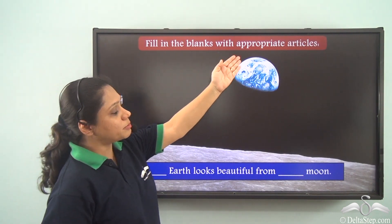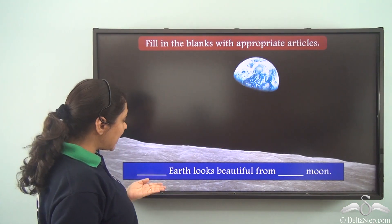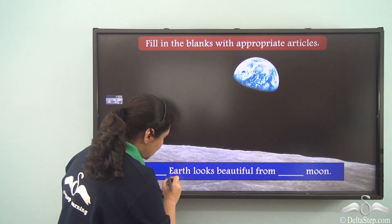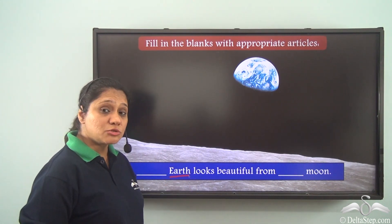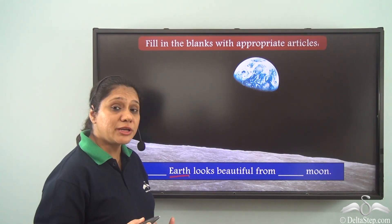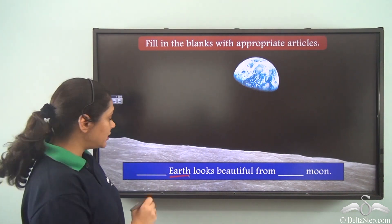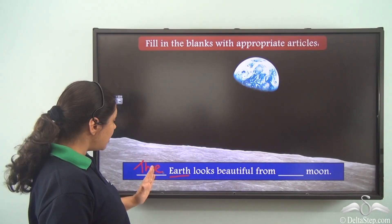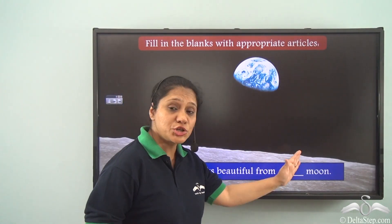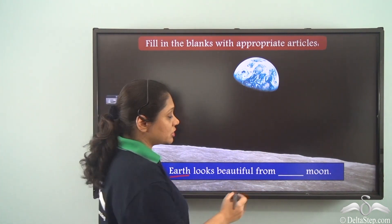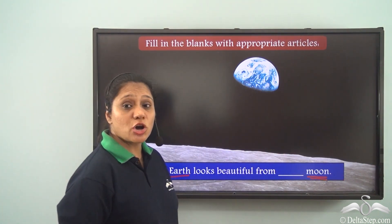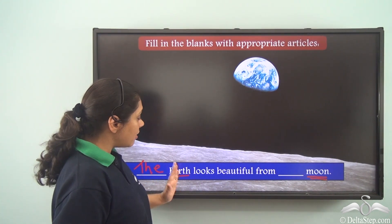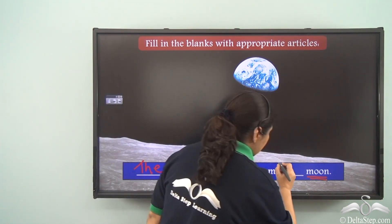Fill in the blanks: '___ earth looks beautiful from ___ moon.' Earth is referring to something specific — a particular planet — so we use the definite article 'the.' Moon is also a specific heavenly body, so we again use 'the.' Answer: 'The earth looks beautiful from the moon.'